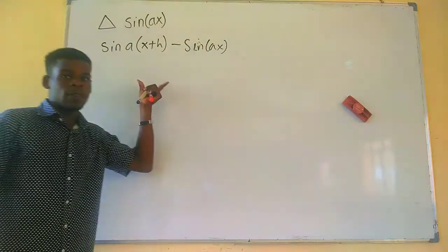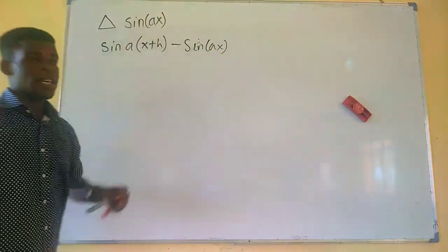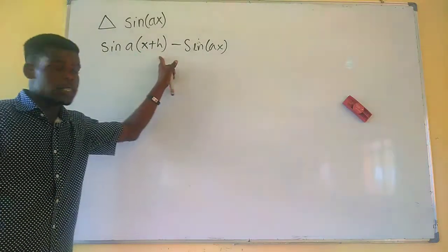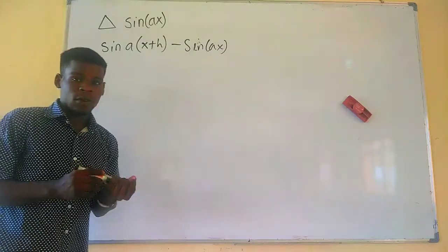So here we just have this as the forward difference of sine x. So we have a times x plus h minus a times x.